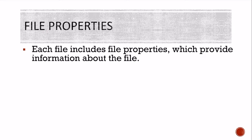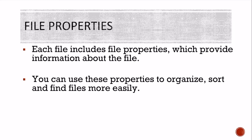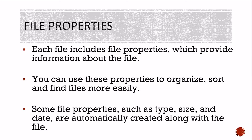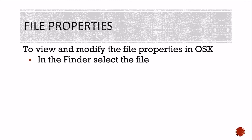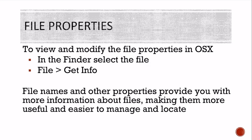File properties: each file includes file properties which provide information about the file. You can use these properties to organize, sort, and find files easily. Some file properties include the type, size, and date, and these are automatically created along with the file. For example, if you need to email pictures and there's a size limit, file properties work really well to see if you're within those boundaries. To view and modify file properties in OS X, select the file in Finder, then go to File and Get Info. File names and other properties provide more information about files, making them more useful and easier to manage and locate.